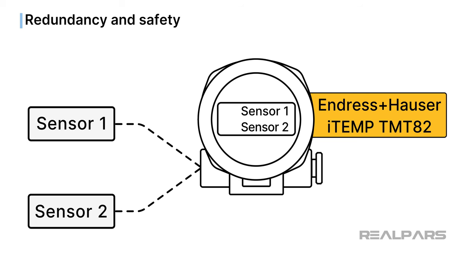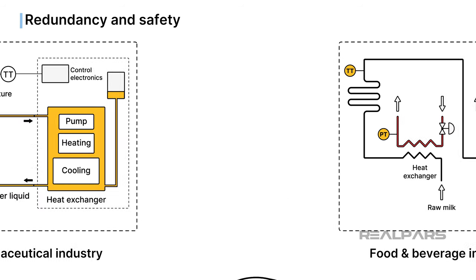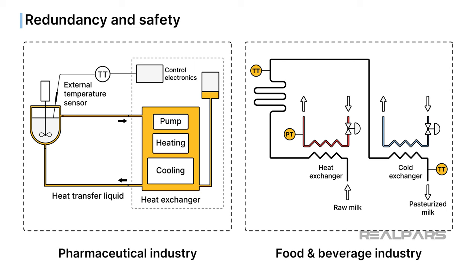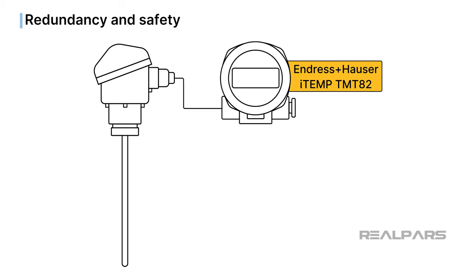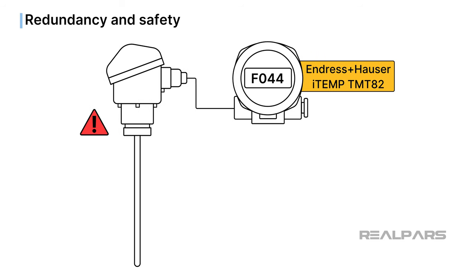Some smart transmitters have built-in self-diagnostics that ensure the device operates reliably, accurately, and consistently. Temperature measurements hold critical importance in numerous industries, including pharmaceuticals and food processing. Transmitter self-diagnostics enables the transmitter to continuously assess its performance, ensuring that temperature readings remain accurate within specified tolerances. Self-monitoring smart transmitters can optimize their performance by compensating for issues such as sensor drift or environmental factors that might affect temperature readings.